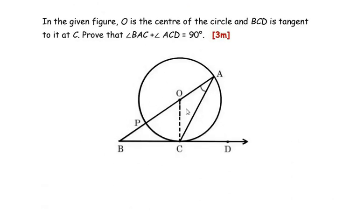In the given figure, O is the center of the circle and BCD is a tangent to it at point C. Prove that angle BAC plus angle ACD is equal to 90 degrees. Here we can see that we have been given a circle with center O and there is a tangent touching the circle at point C, and we have been asked to prove that angle BAC plus angle ACD is equal to 90 degrees.